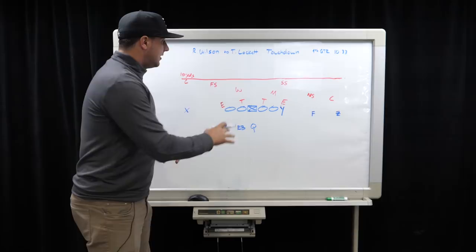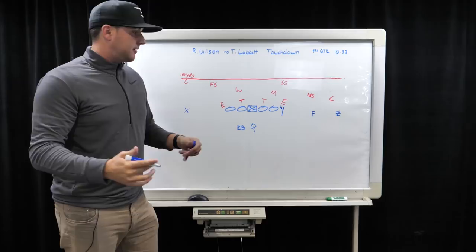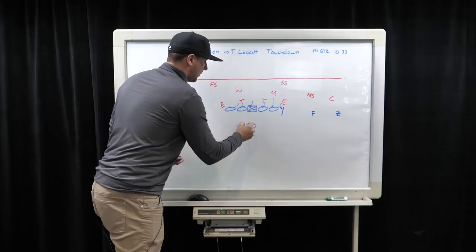So everybody else on the offensive line is running the run play, including the running back. What Russell did was he gave a subtle signal to Tyler. Awesome job by Tyler Lockett noticing the signal and runs a fade route.